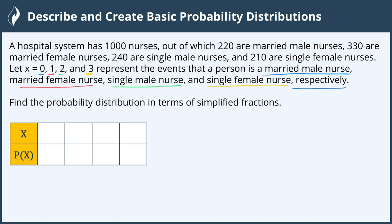Let's go ahead and fill in our probability distribution. We have x with events 0, 1, 2, and 3. Let's label those above just to keep things straight: x = 0 is married male (mm), x = 1 is married female (mf), x = 2 is single male (sm), and x = 3 is single female (sf).